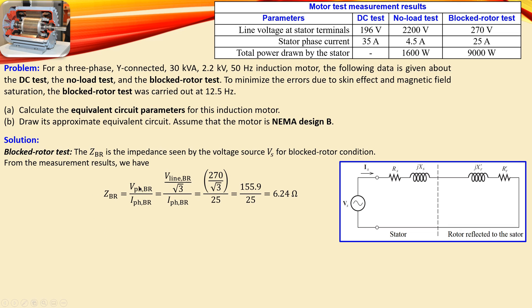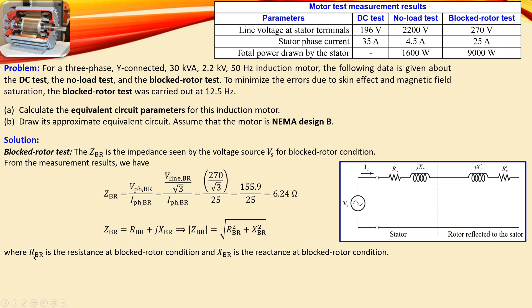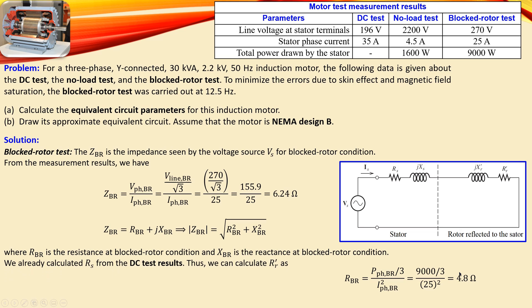To find Zbr, we divide the phase voltage (line voltage divided by √3) by the phase current, giving Zbr = 6.24 Ω. The block rotor resistance Rbr is calculated from the per-phase power (total power divided by three) and the phase current. This yields Rbr = 4.8 Ω.